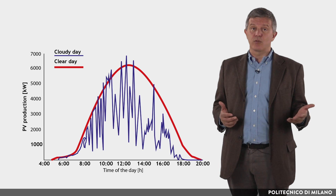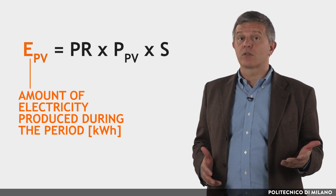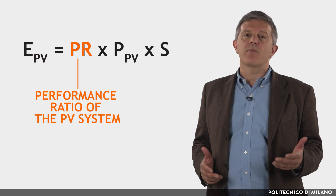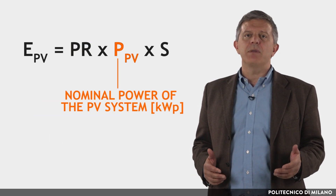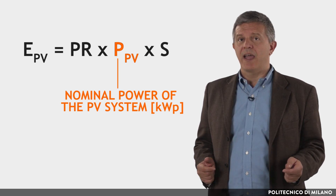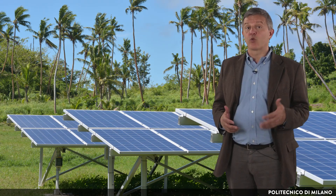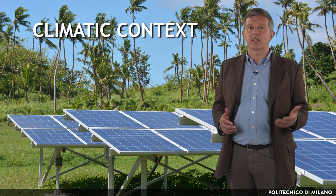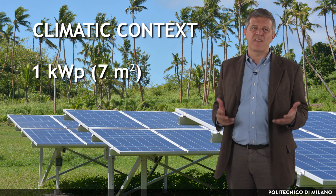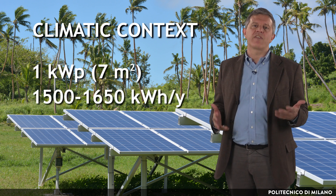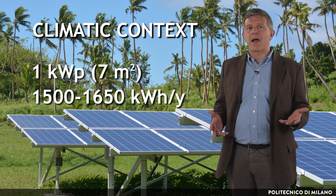The electricity produced by a photovoltaic system during a given period can be estimated using this simplified formula, where EPV is the amount of electricity produced during the period, PR is the performance ratio of the PV system with an average value usually in the range 0.75–0.8, PPV is the nominal power of the PV system, and S is the solar irradiation incident on the module surface during the period. The productivity of a photovoltaic system is highly dependent on the climatic context. As an indicative figure, a 1 kW peak system — about 7 square meters of modules — can produce between 1,500 and 1,650 kWh of electricity annually, depending on the site and available solar radiation.